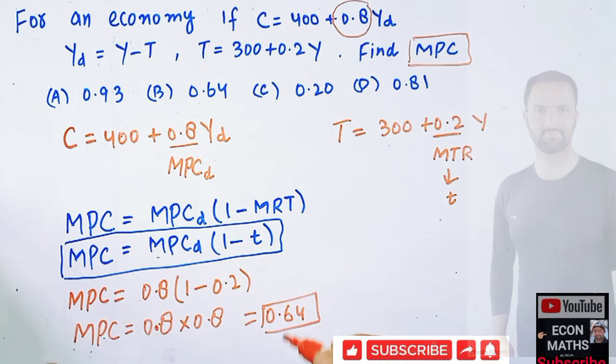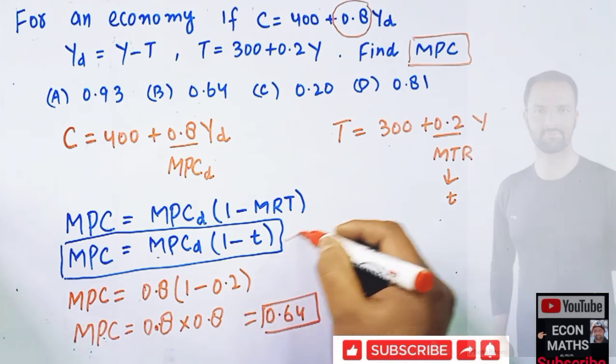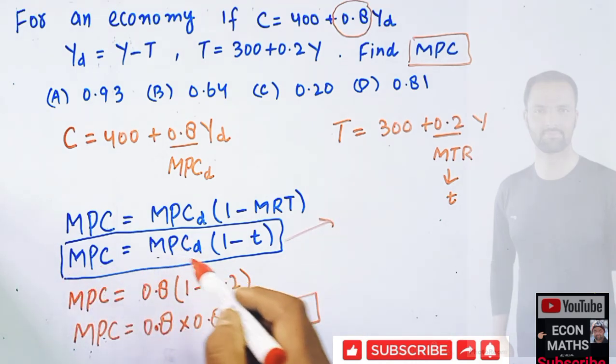The point I want to make here is that the relationship between MPC and the MPC of disposable income is given by this formula. I hope I make myself clear in this video, thank you.